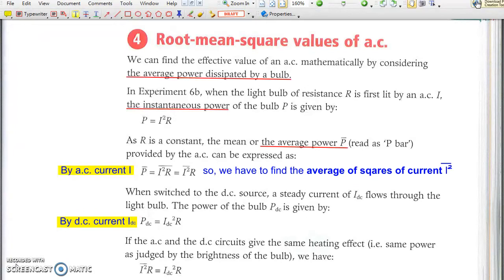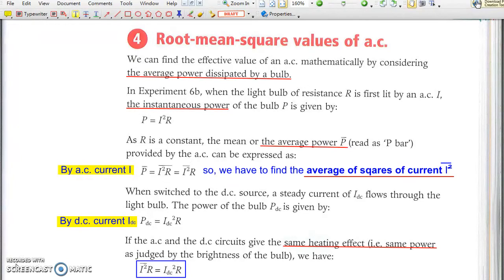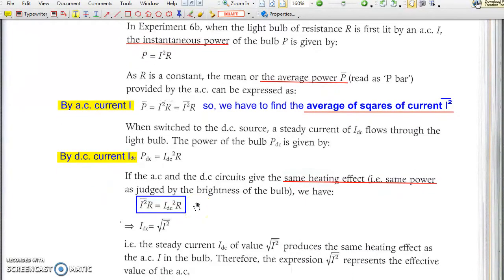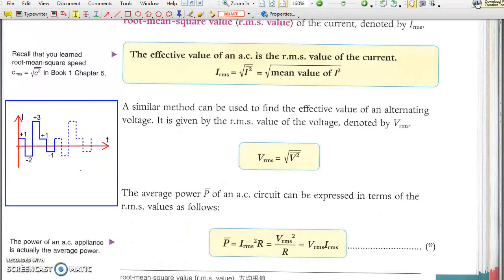So if we can find the average of the squares of current, then the equivalent steady DC current is given by I_DC equals the square root of the average of the squares of current. So what does this root mean square value of current mean? Let me give a simple illustration here.